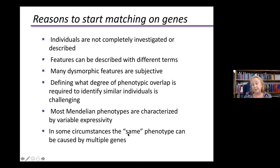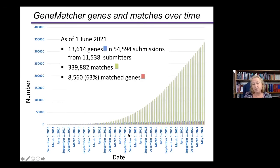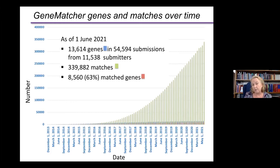Also, sometimes the same phenotype can be caused by multiple genes. This is the growth of the tool, which is extremely gratifying. Since it started in December 2013, last month there were almost 340,000 matches. The data within GeneMatcher include 13,614 unique genes from 54,500 submissions from 11,538 submitters all over the world, and about 63% of those genes have at least one match.